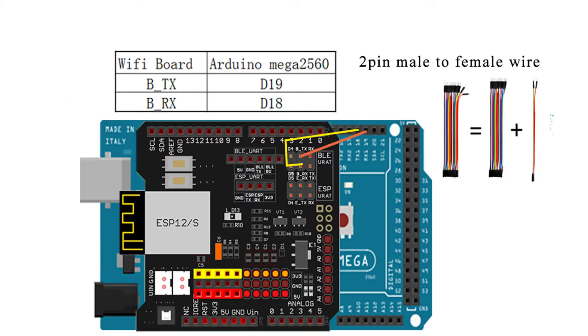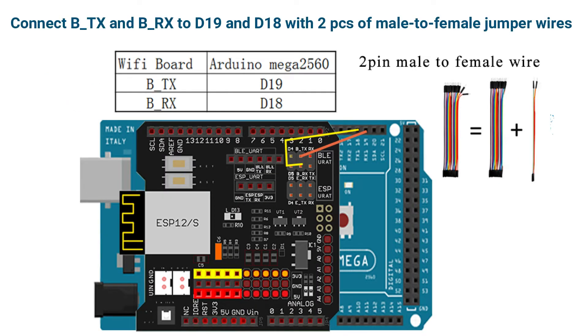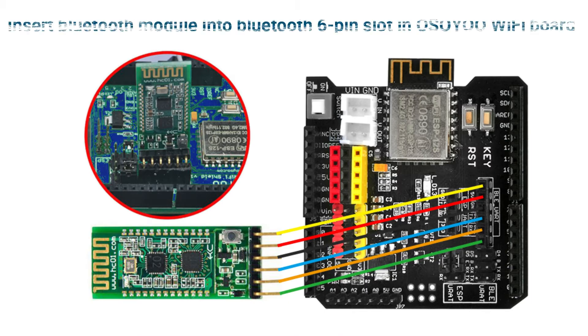Connect BTX and BRX to D19 and D18 with two pieces of male-to-female jumper wires. Then insert the Bluetooth module into the Bluetooth 6-pin slot in the Osou Wi-Fi Board.